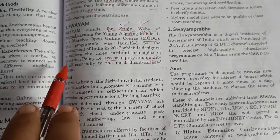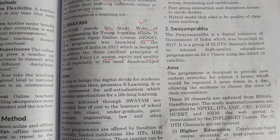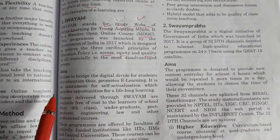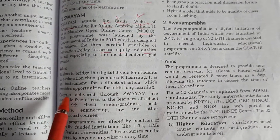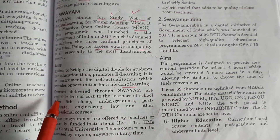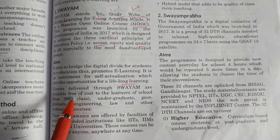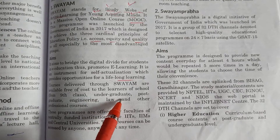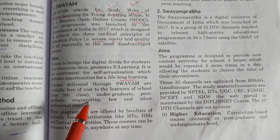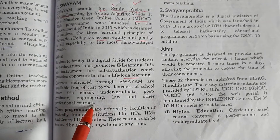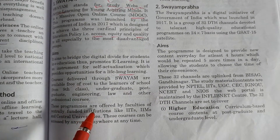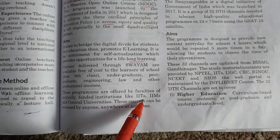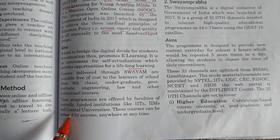The aim of Swayam is to bridge the digital divide for students in e-education, thus promoting e-learning. It is an instrument for self-actualization, providing opportunities for lifelong learning. Courses delivered through Swayam are available free of cost to learners from school — from ninth class — undergraduates, postgraduates, engineering, law, and other professional courses. These programmes are offered by faculties from centrally funded institutions like IITs, IIMs, and Central Universities.